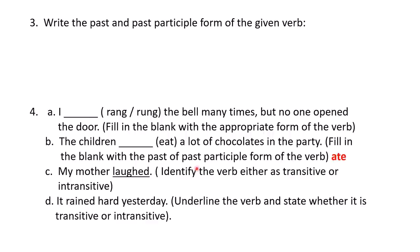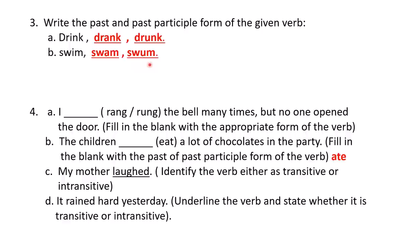Third question: write the past and past participle form of the given verbs. Drink — drank, drunk. Swim — swam, swum. Sleep — slept, slept. Do — did, done. So these are the past tenses and past participles of the given four verbs.